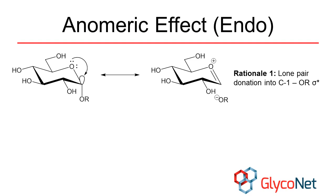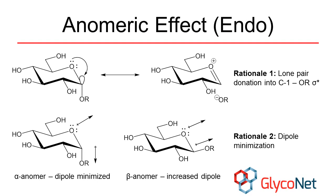We'll now move on to discussing some electronic effects that influence the conformations of carbohydrates, beginning with the endoanomeric effect. Electronegative substituents on carbon-1, the anomeric carbon, prefer to be oriented axially as opposed to the equatorial orientation that one would expect based on sterics. This observation can be explained in two ways. First, an axial anomeric substituent allows for one of the lone pairs on the ring oxygen to donate into the antibonding orbital of the C1-O1 bond. This is supported by a shorter C1-O1 bond, a longer C1-exocyclic bond, and a ring oxygen with more sp2 character. A second explanation is that dipole-dipole repulsion is reduced in sugars with axially-oriented electronegative substituents. Consistent with this, the anomeric effect is reduced in polar solvents such as water.